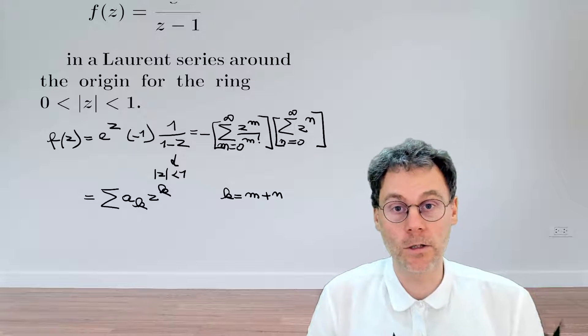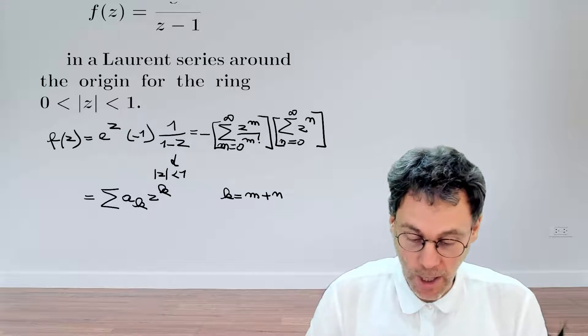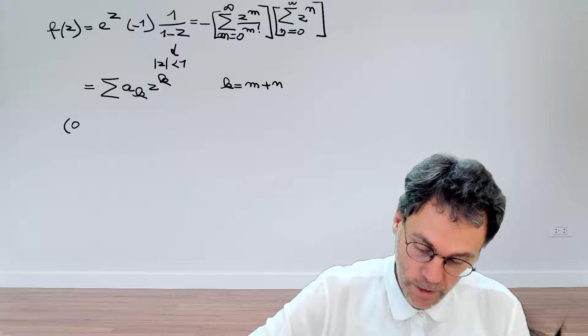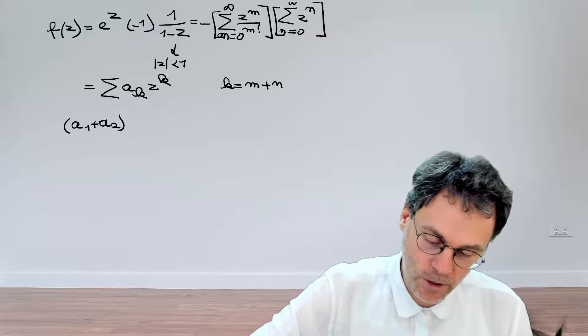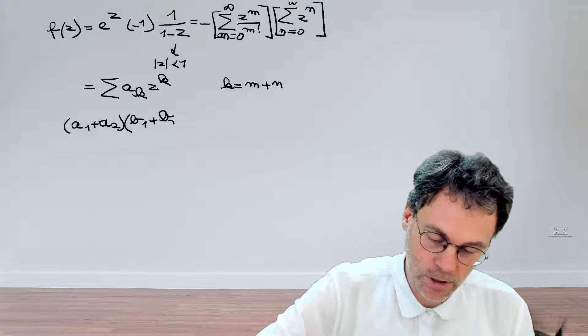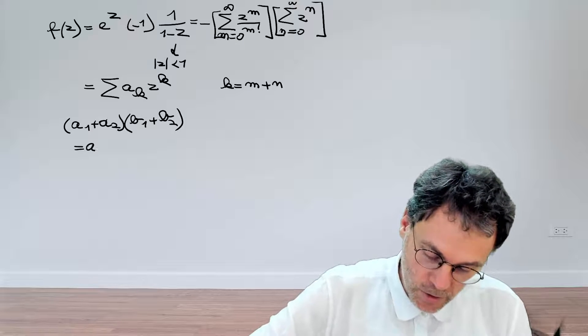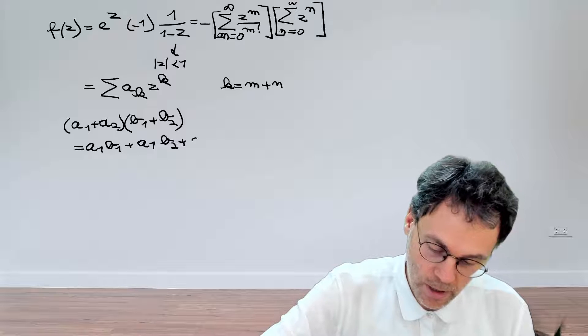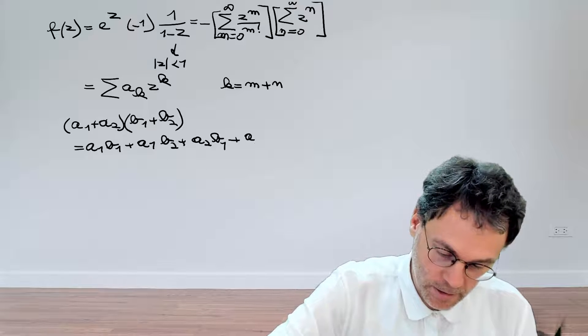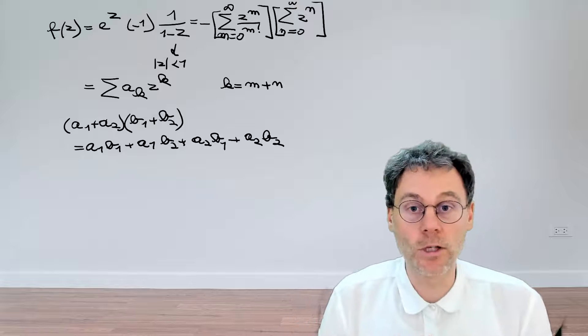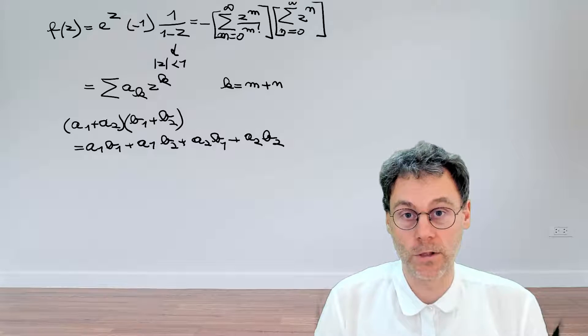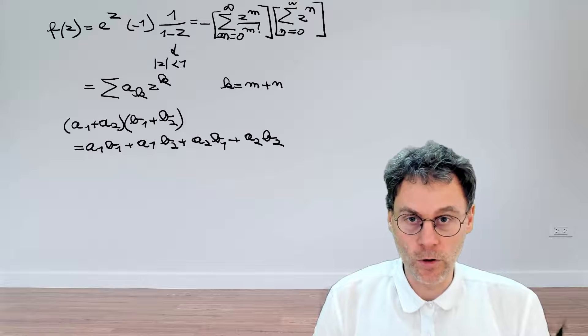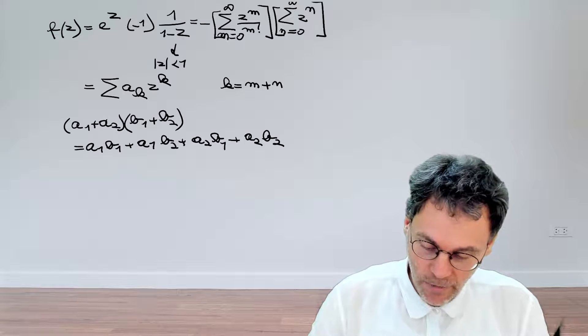In case you're not really familiar with how you should take the product of two series expansions, let's just take a step backwards and calculate a much simpler product of two mini series. Let's have (a1 plus a2) times (b1 plus b2). Hopefully, this will not come as a surprise to you that you can write this as a1 b1, a1 b2, a2 b1, and a2 b2. So this will give rise to two times two, four different terms. And each of these terms is important. We should not neglect one of those terms.